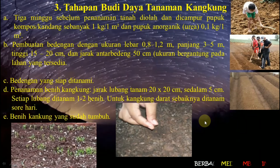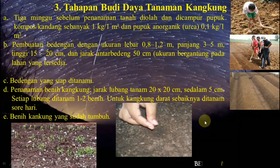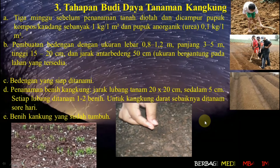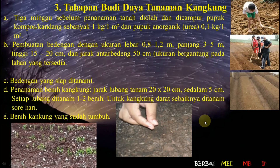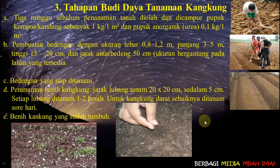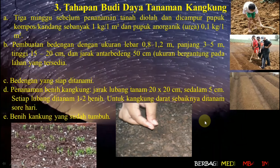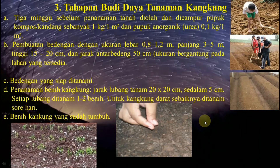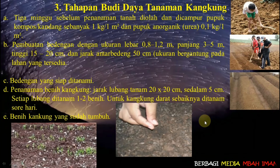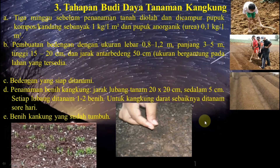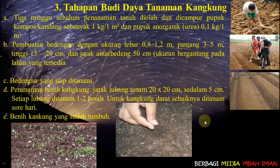Tahapan budidaya tanaman kangkung: tiga minggu sebelum penanaman, tanah diolah dan dicampur pupuk kompos atau kandang sebanyak 1 kilogram per 1 meter persegi. Jika dibutuhkan pupuk anorganik, menggunakan 0,1 kilogram per 1 meter persegi. Ini untuk kebutuhan tempat budidaya tanaman sayuran yang di kebun atau di tegalan, yaitu di tempat yang luas.